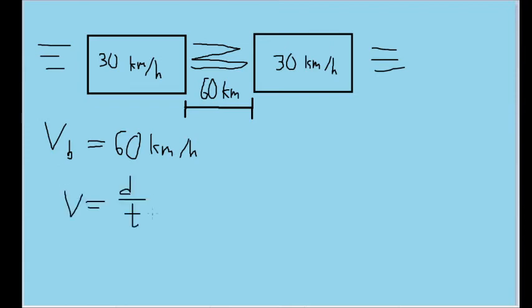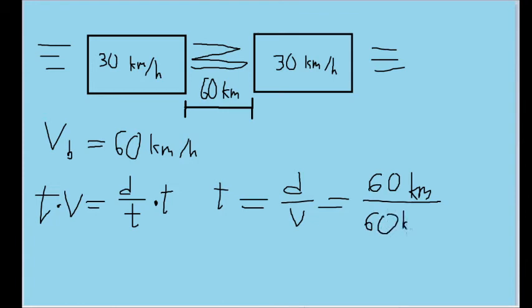From the formula for average speed, we can multiply both sides by T and divide both sides by V to see that an amount of time can be found by a change in position over speed, which in this case is the relative distance that one train has to travel relative to the other, which is 60 kilometers, divided by the speed of one train relative to the other, which is 60 kilometers per hour. This tells us that the time it will take for the trains to collide is one hour.